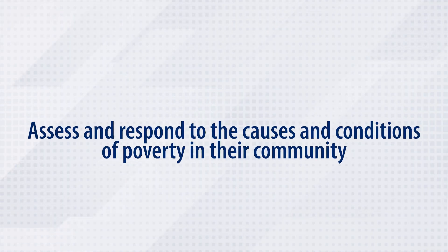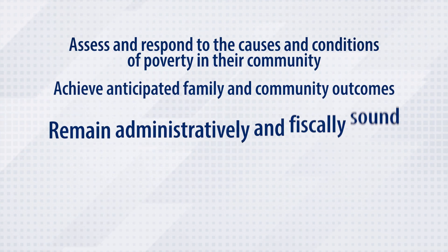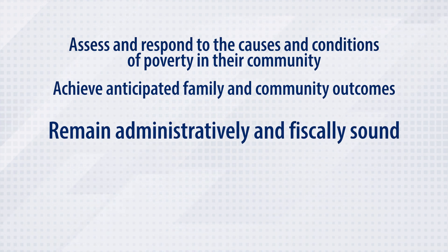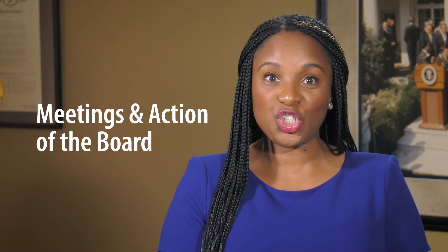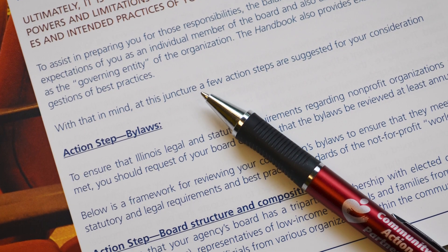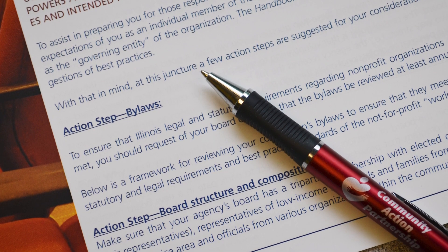Boards are responsible for assuring that agencies continue to assess and respond to the causes and conditions of poverty in their community, achieve anticipated family and community outcomes, and remain administratively and fiscally sound. Boards establish bylaws to define how an organization will be managed and how it will run. They determine which staff and board members have authority and decision-making responsibilities and how those responsibilities should be carried out. The bylaws are the first place to look to ensure that the way board meetings are called, conducted, and how they take action and records are in place. If the board allows for electronic voting and/or remote meetings via email, remote platform, or teleconference, this process should be a part of the bylaws.